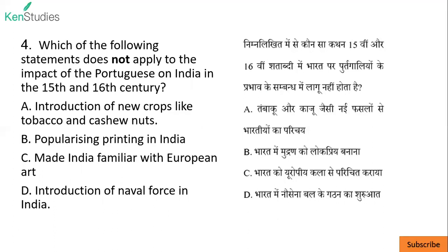First: introduction of new crops like tobacco, cashew nuts, chilli, and potatoes — tambaku, kaju, mirch, aalu — all these things they brought here. Second: popularizing printing in India — the printing press was also popularized in India by them.